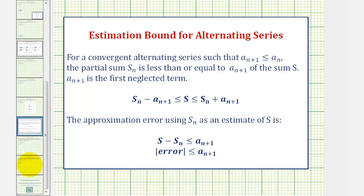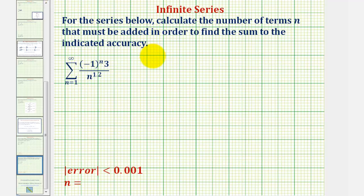So going back to our example, we want to find n such that a sub n plus 1 would be less than the error of 0.001. Well, a sub n plus 1 would be 3 divided by the quantity n plus 1 to the 1.2 power. We want this to be less than 0.001.